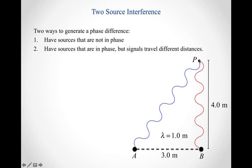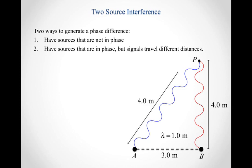If I want to think about what's going on at point P, source B is four meters away from point P. But because this basically makes a 3-4-5 right triangle, that tells me that the waves traveling from source A don't just travel four meters — they have to travel this additional distance. So the first thing I want to do is figure out what that path difference is.